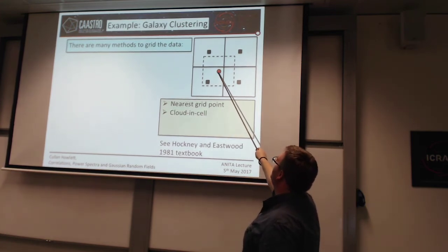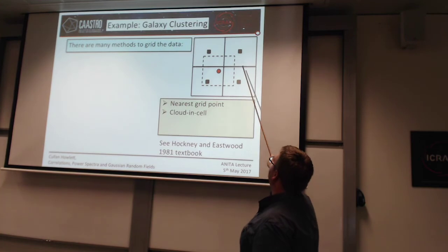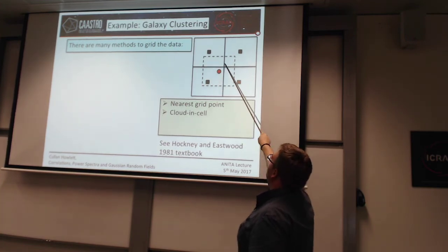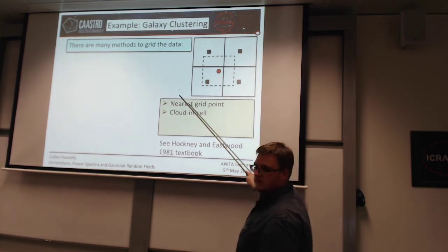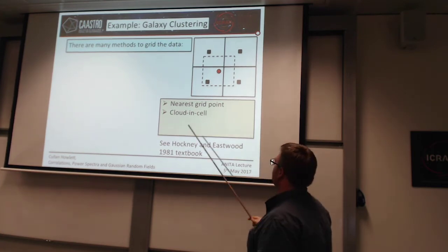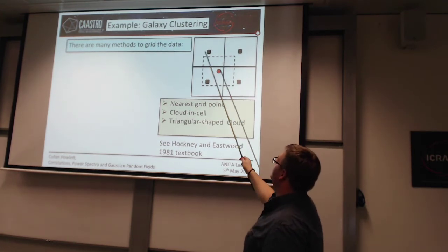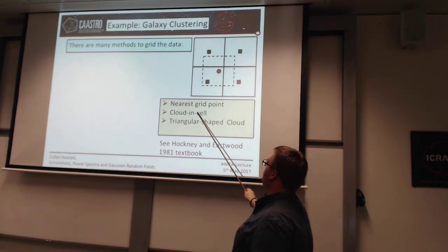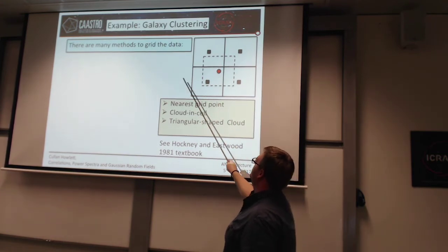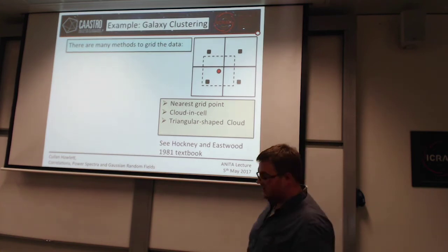I could give a weight to each of the four nearby grid cells based on the overlap between this area and the total size of that cloud — that's called cloud-in-cell. You can also do triangular shaped cloud, which is very similar to cloud-in-cell except now you weight over the nine nearest cells.